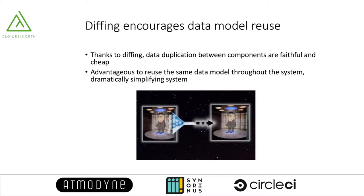Another architectural benefit is that diffing encourages data model reuse. A pair of diff and patch functions is like a pair of teleportation devices. Data can be replicated on the other side without much fuss. Because data replication becomes cheap, it becomes beneficial to reuse the same data model in different parts of the system, rather than each part coming up with its own data models. This will dramatically simplify system design. As we know, most of our programming is just data transformation from one shape to another. Data model reuse saves a lot of work.